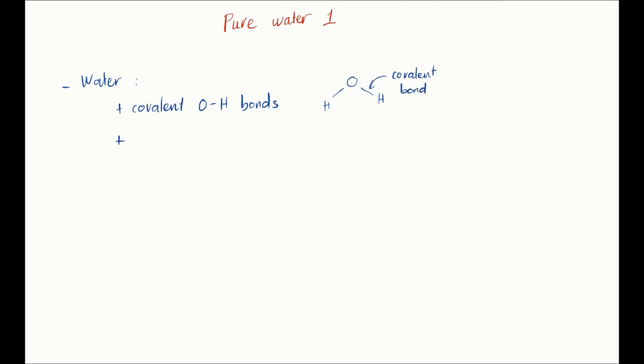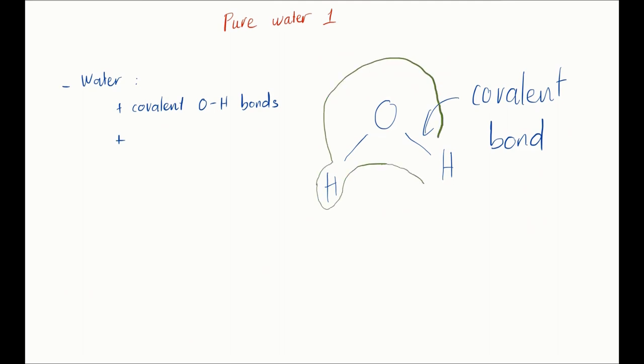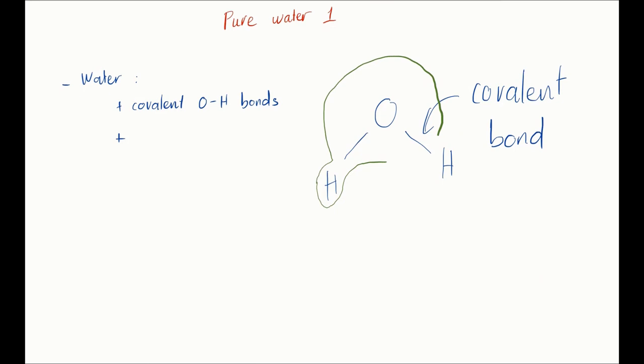The hydrogen-oxygen bond, however, is polar. That means the electrons are not equally shared. Since oxygen is much more electronegative than hydrogen, the electron density mostly resides on the oxygen, or you can say that the oxygen pulls most of the electron density to itself.